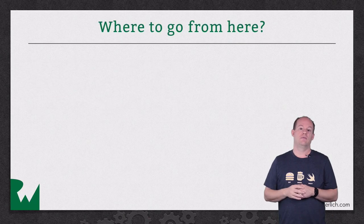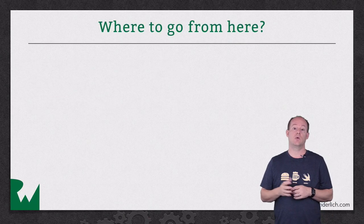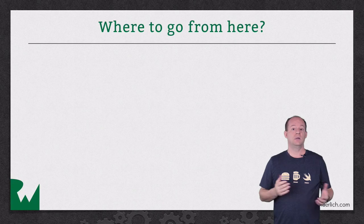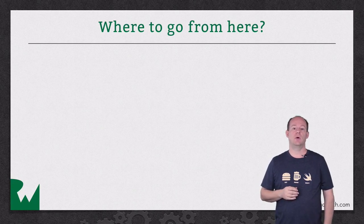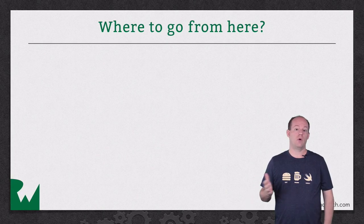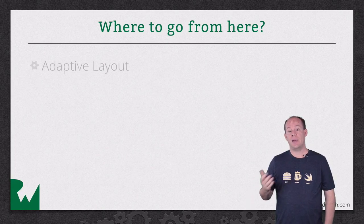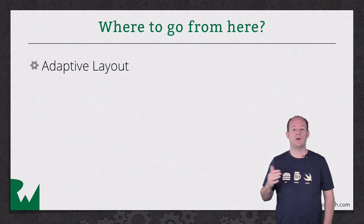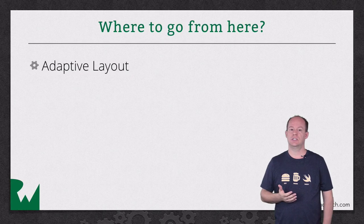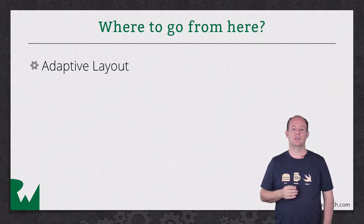AutoLayout is great for dealing with all the different screen sizes and orientations we have to handle, but sometimes no matter what constraints you define, you just can't get your interface to look right in both portrait and landscape, or on both an iPhone 4S and an iPad. Adaptive Layout builds on top of AutoLayout and provides a mechanism for solving these challenging situations. For more, be sure to check out the Adaptive Layout video tutorial series.